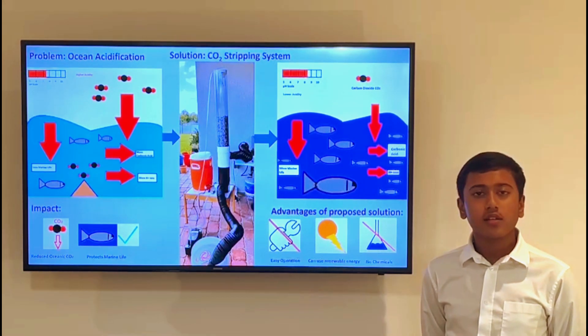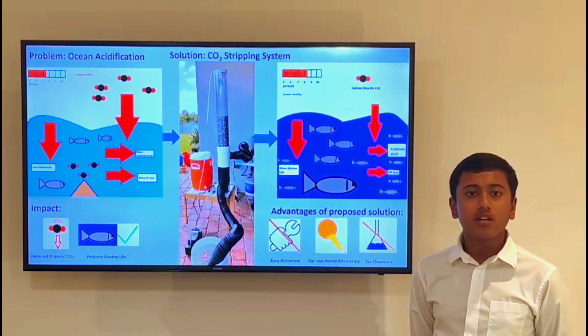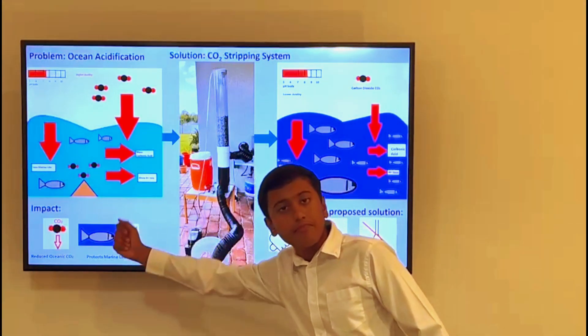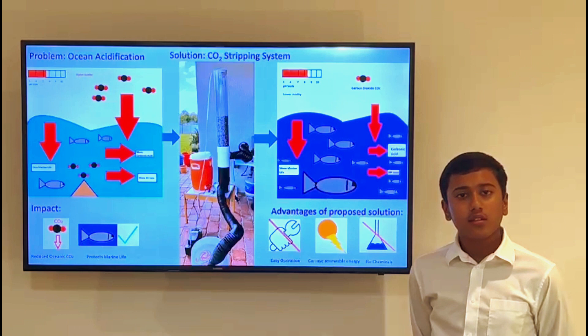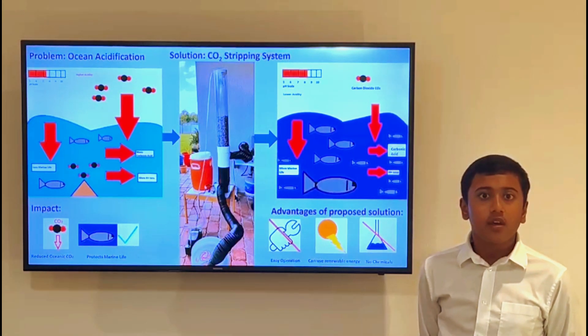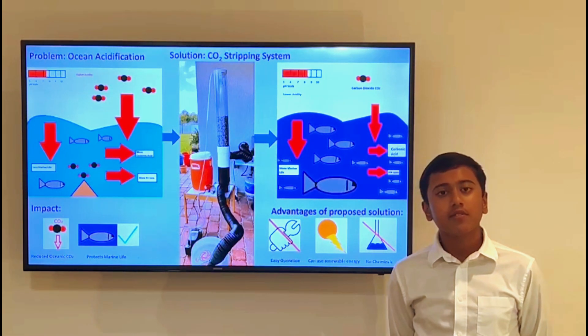Oceanic acidity levels have significantly risen in the past few decades because of human causes and natural causes such as underwater volcanoes. Due to this, the marine life in certain underwater regions is suffering. Clams and mussels are losing shell thickness and coral reefs are dying.